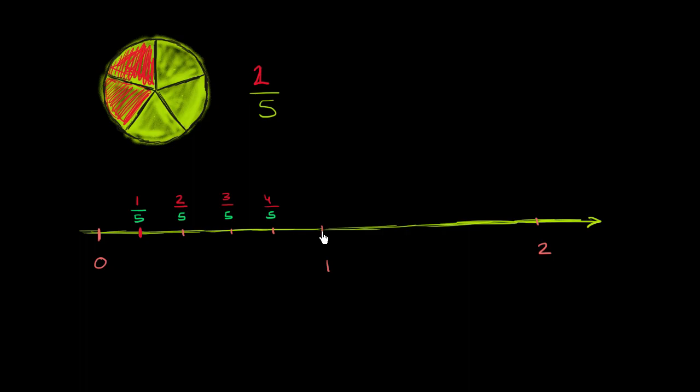And then I could keep going. I could call this right over here. I've traveled five out of the five equal sections towards 5. So I could call this right over here 5. Let me do that in a red color. I could call this right over here 5 over 5. And you might say, wait. But 5 over 5, we've gotten to 1.